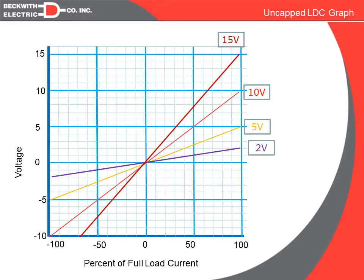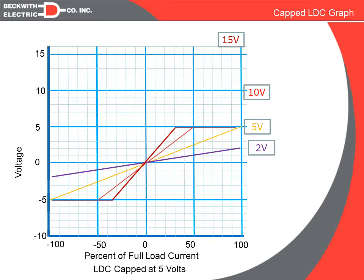If we cap the compensation at 5 volts, the slope of the 15-volt setting still applies, but once we reach 5 volts it will not apply any additional compensation in either direction. The idea of capped compensation is that it allows a higher R and X value for a steeper slope, but still provides insurance that no matter what the load does, no more than a set number of volts of total compensation is applied. The bus voltage will never be more than five volts higher or lower than the band center.